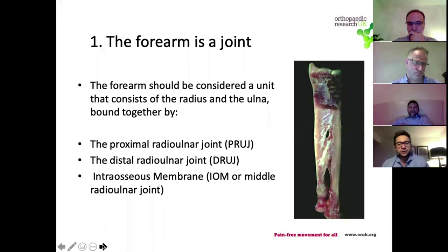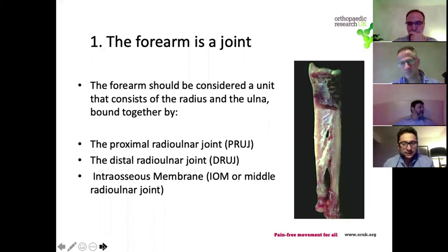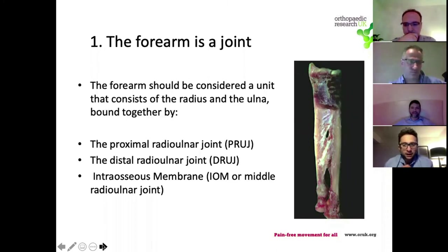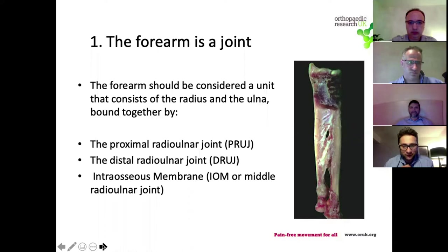Some people have gone a step further and started to refer to the intraosseous membrane, or IOM, as the middle radio-ulnar joint, because it plays such a pivotal part in the maintenance of forearm function and stability. As we will see, when it is injured there are some really significant ramifications in terms of function thereafter that need to be addressed.